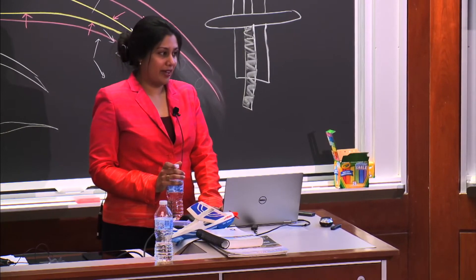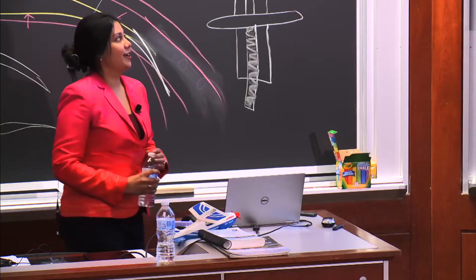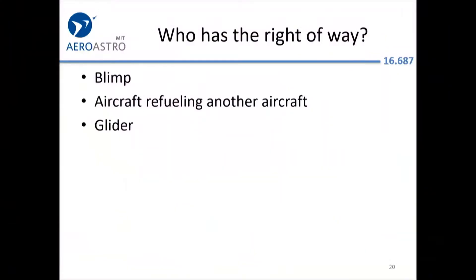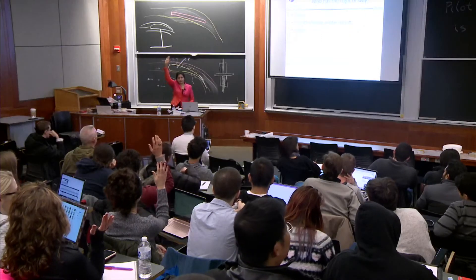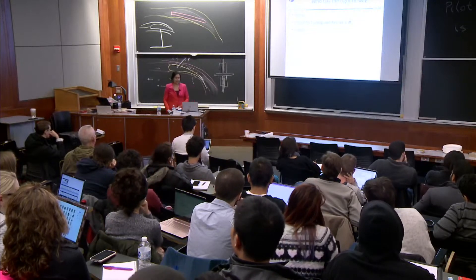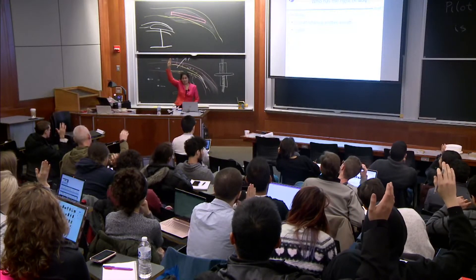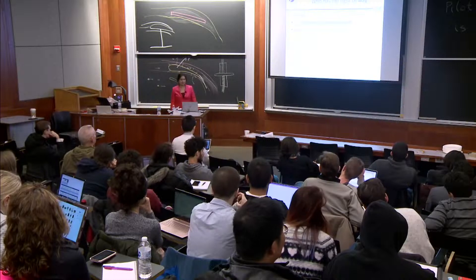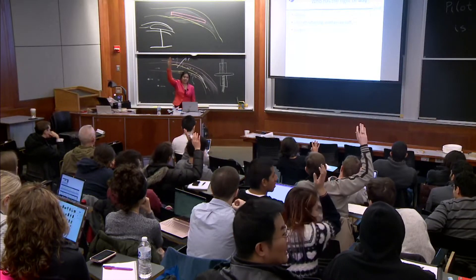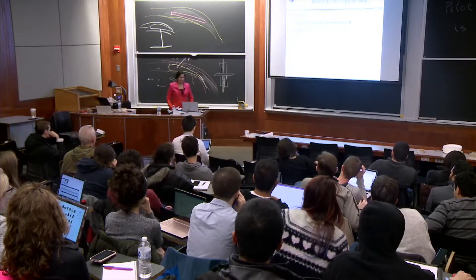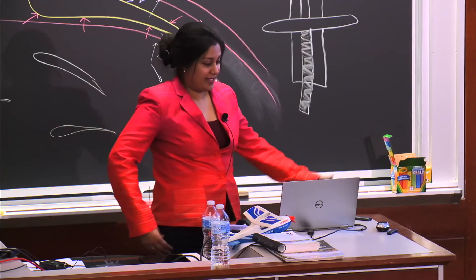Before talking about right of way, here's a question: who has the right of way — a blimp, an aircraft refueling another aircraft, or a glider? After a class poll — about 20 for blimp, 20 for aircraft refueling, and the majority for glider — the majority wins. It's the glider.